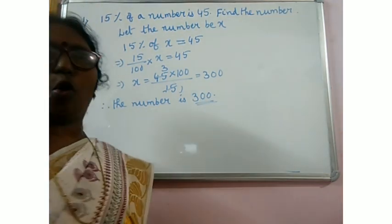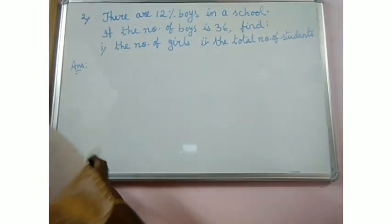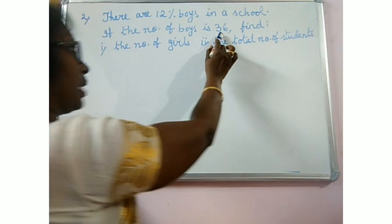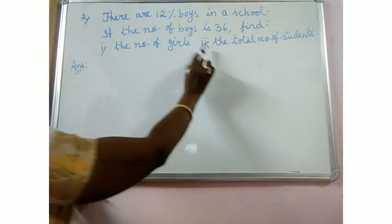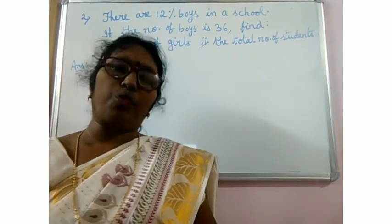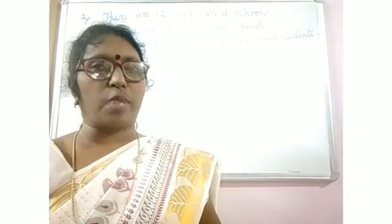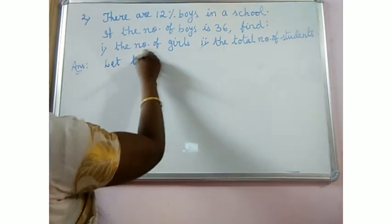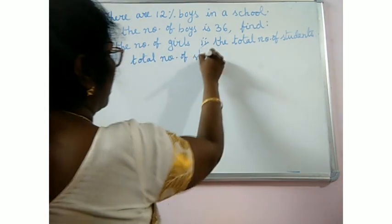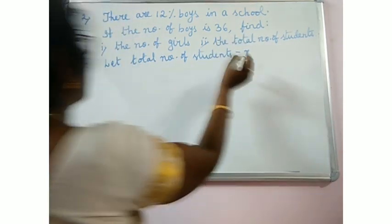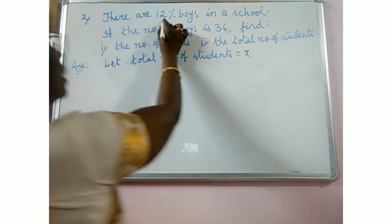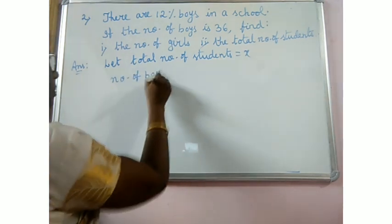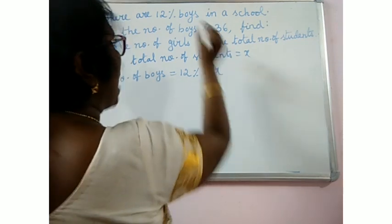Your next question is this. There are 12% boys in a school. If the number of boys is 36, find the number of girls and the total number of students. Let total number of students is equal to x. Number of boys is equal to 12% of x.